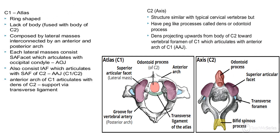C1 (atlas) is a ring-shaped structure with no body and no spinous process. It has superior facets that articulate with the occipital condyle forming a 'yes' joint, and has anterior and posterior arches. C2 (axis) is similar to typical cervical vertebrae but has a unique process called the odontoid process (dens). It has a superior articular facet that articulates with the inferior articular facet of the atlas, forming a 'no' joint — a pivot-type joint. Its spinous process is short and bifid.